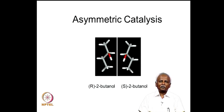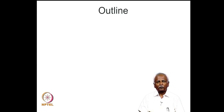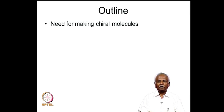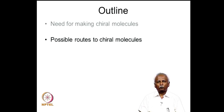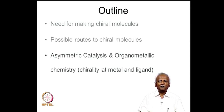When you want to synthesize these molecules in a pure form — either R-2-butanol or independently S-2-butanol — you need some special techniques, and that is the topic of today's lecture. We will first talk about the need for making chiral molecules and the possible routes by which we can make these chiral molecules, before we talk about asymmetric catalysis and organometallic chemistry.